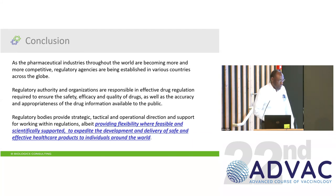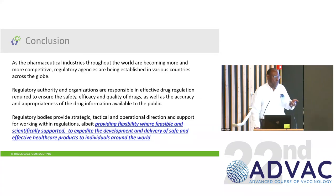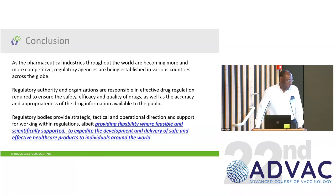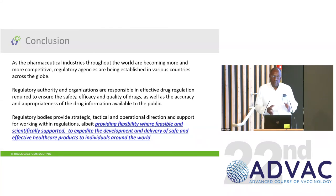In summary: the assessment, licensure, control, and surveillance of new-generation vaccines present major challenges to national regulatory authorities — increasing numbers of novel vaccines, complex quality concerns, and new technical issues. The role of national regulatory authorities around the world is to ensure the safety, quality, and efficacy of human medical products including vaccines, with sound legal and scientific procedures. Regulatory bodies provide strategic, tactical, and operational direction and support for working within the law, while providing flexibility where feasible and scientifically supported to expedite development and delivery of safe and effective products. The regulatory role is to facilitate getting good, safe, effective products to market — not to be a stumbling block.